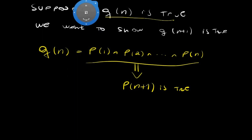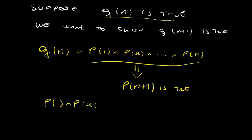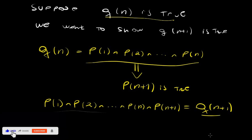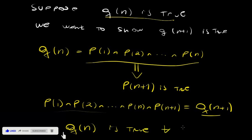So we have P of 1, P of 2, through P of n, and P of n plus 1 all true. That is exactly Q of n plus 1 being true. Therefore Q of n is true for all natural numbers, which is exactly what we wanted to prove.